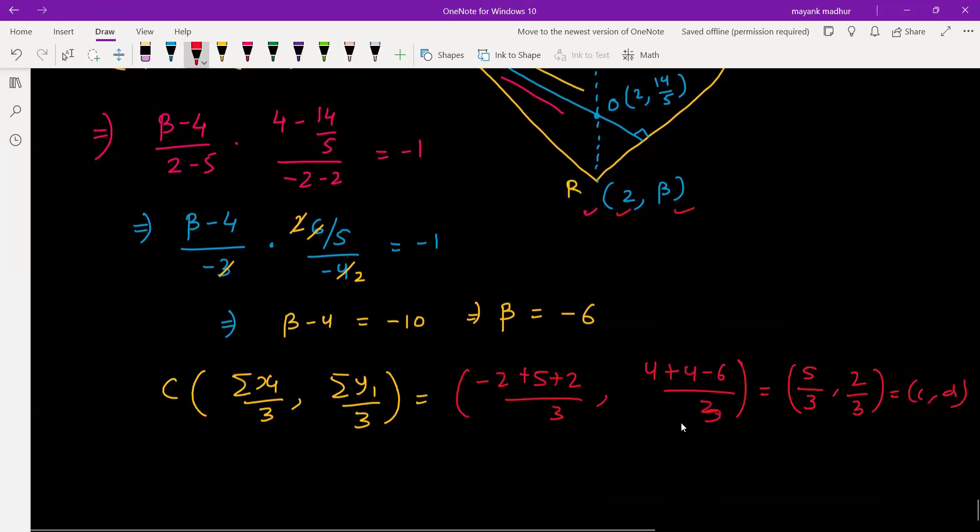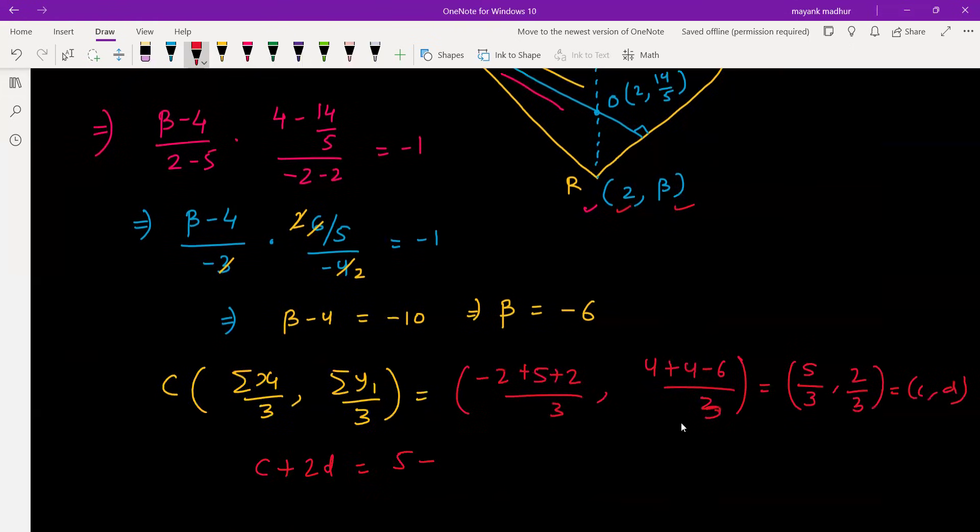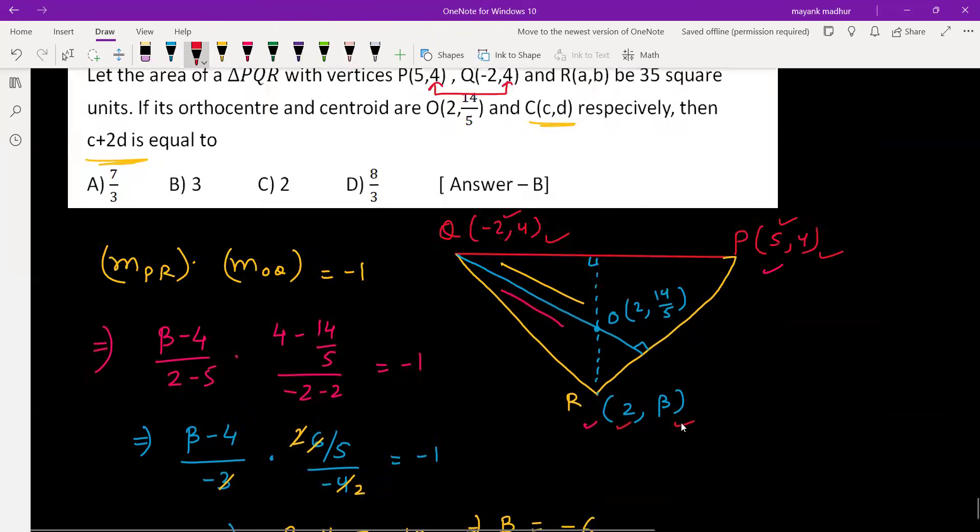So c plus 2d will be 5 plus 2 into 2, which is 4, giving 9 by 3, which is 3. The answer is option B, which is 3.